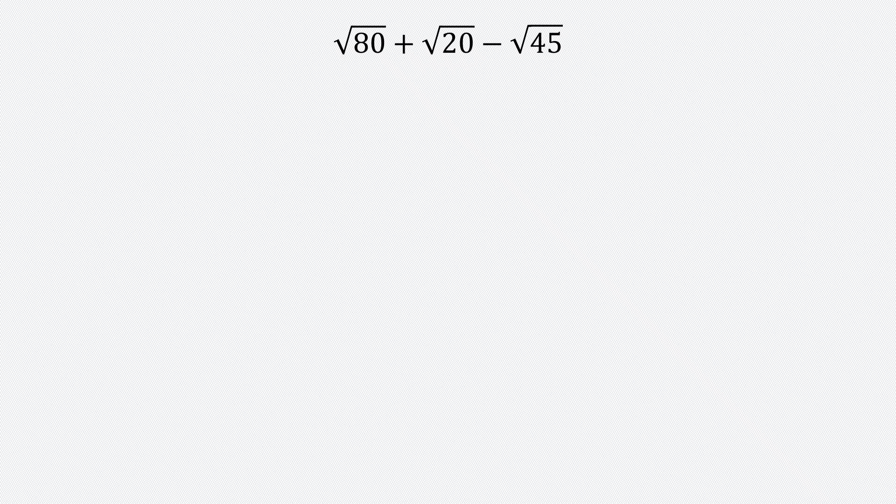So 80 can be written as 16 times 5 where 16 is a perfect square and 5 is an integer. 20 is 4 times 5 where 4 is a perfect square. And 45 is 9 times 5 where 9 is a perfect square.